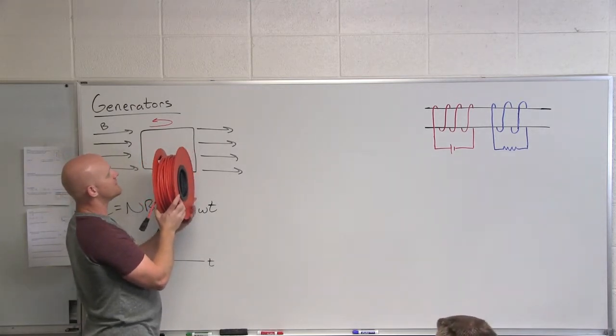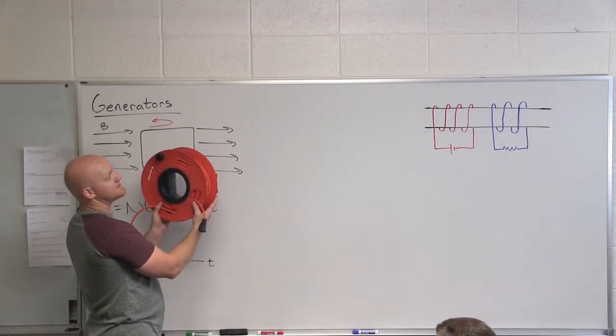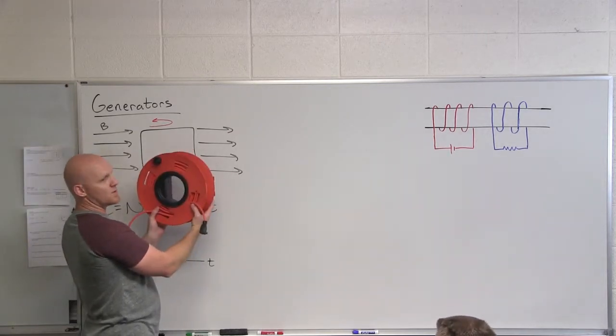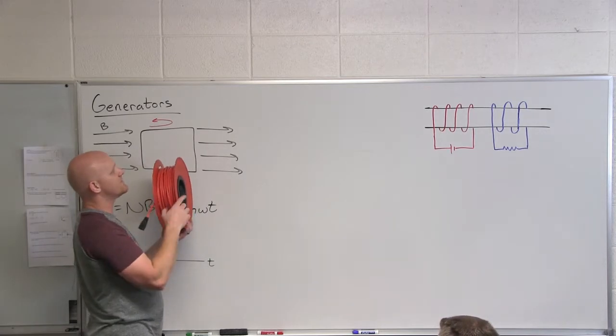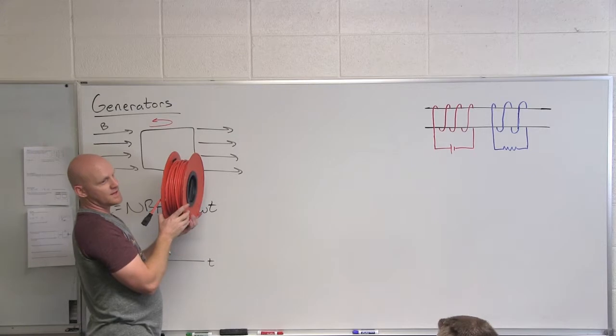As I go from here to here, the flux still points to the right, but now is it increasing or decreasing? Decreasing. And so through this point, because it's decreasing, even though the field and the flux point to the right, the change in the flux is going to point to the left.